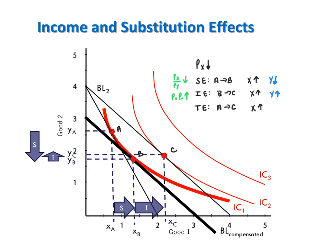In addition, from A to C, the consumption of y decreases. This reveals that the substitution effect must be stronger than the income effect on good y, because the substitution effect pulled y down, whereas the income effect pulled y up. Since in total y decreases, the substitution effect must have been dominant.